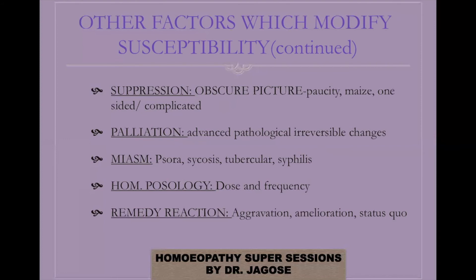In cases of suppression, the picture is generally obscure — symptoms are hazy, ill-defined, and not complete, making prescription difficult. In an obscure picture, you may get a paucity of symptoms indicating low susceptibility, a maze of symptoms indicating high susceptibility, or a one-sided or complicated case indicating low susceptibility.